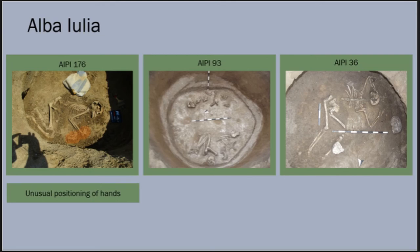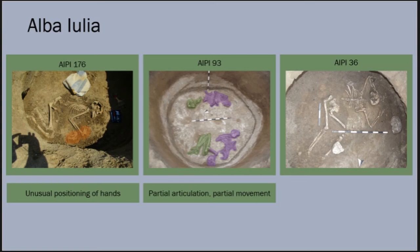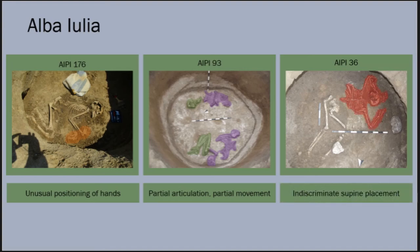Individual 93 was found in a partially articulated flexed position on the right, but there was post-mortem movement of partially articulated remains, and some persistent articulations suggest that elements were removed while the body was still partially fleshed. Accordingly, this movement might represent animal activity that occurred if pits were left open for a period of time after initial deposition. Finally, individual 36 shows the most unusual placement: the only burial that is not flexed, positioned with arms extended above the head.